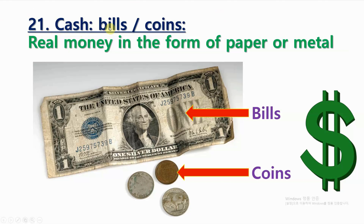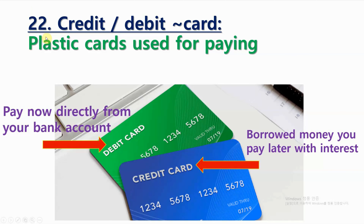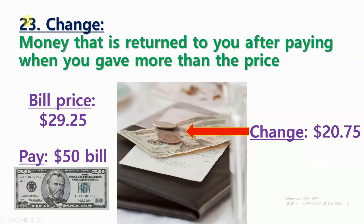Number 21: Cash, such as bills or coins. Real money in the form of paper or metal. Number 22: Credit card, or debit card. Plastic cards used for paying. Number 23: Change. Money that is returned to you after paying when you gave more than the price.